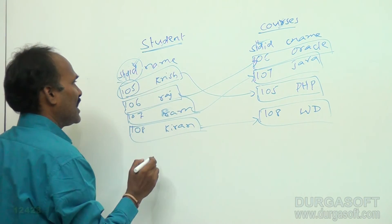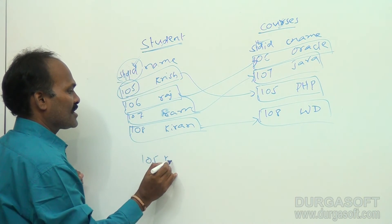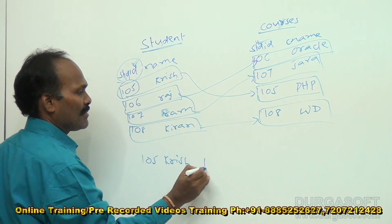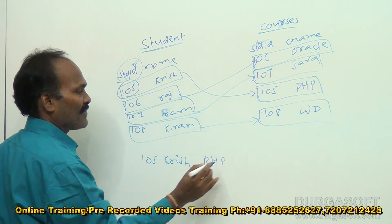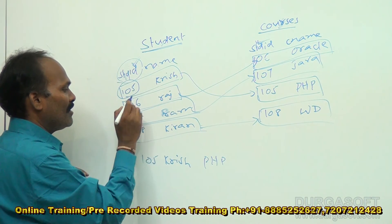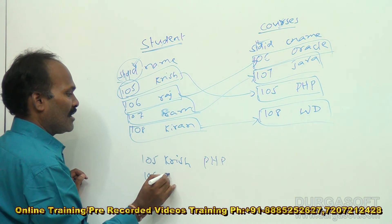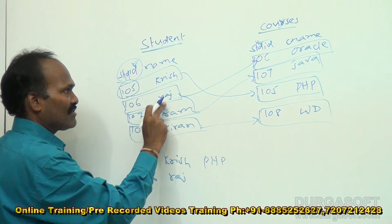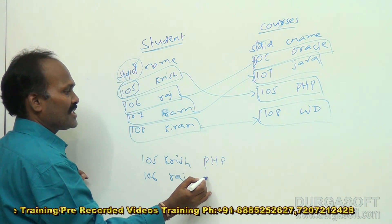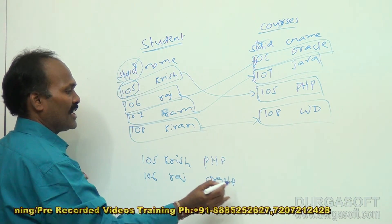If I JOIN these two tables, for 105 Krish will come, and the relevant course name is PHP. After combining these two tables, this information will appear. For 106, Raj will come, and he has joined Oracle.